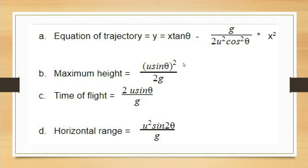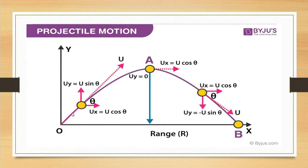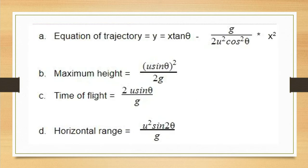In this case, let's take a look at the parabola. For the maximum height, we have u²sin²θ / 2g. For the time of flight and horizontal range, we have a formula. If we use this, we have a shortcut formula.